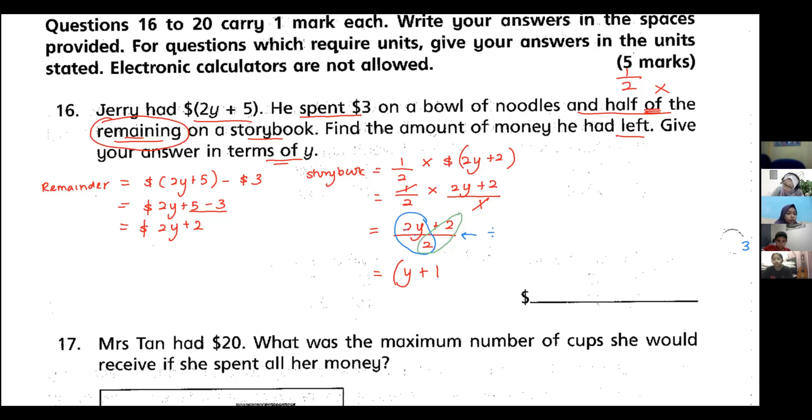So you put back in bracket and then the dollar sign. This is my storybook cost. Now to find my leftover, what must I do? I take the amount of money - I take my total money, which is $(2y + 5) minus my storybook. Actually, we don't take 2y + 5...